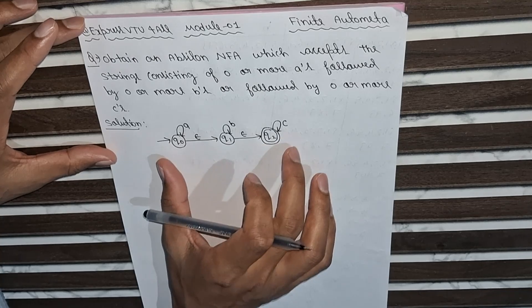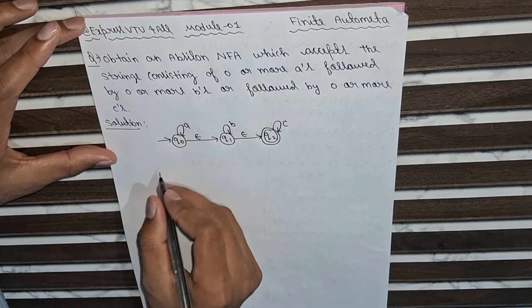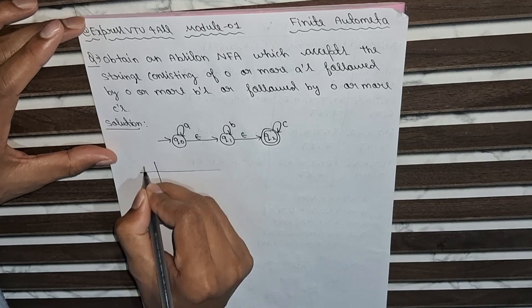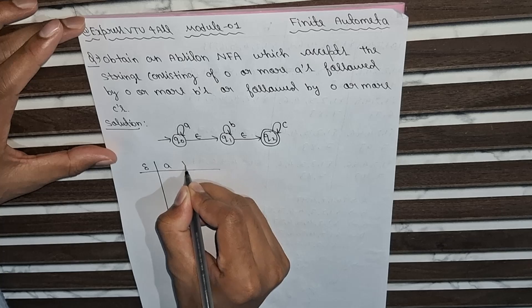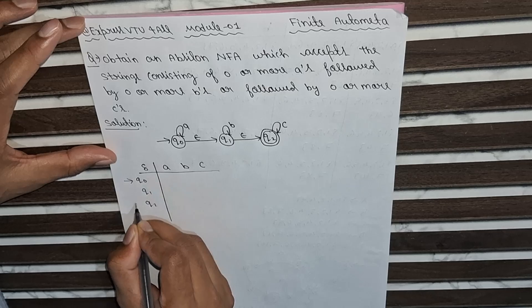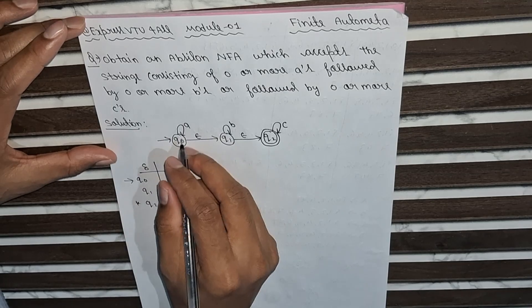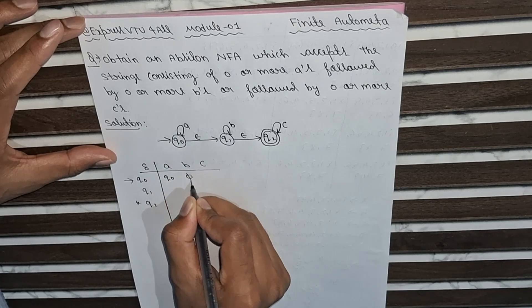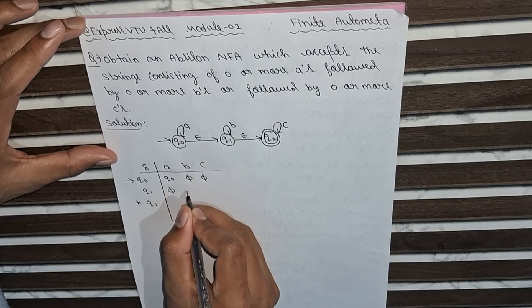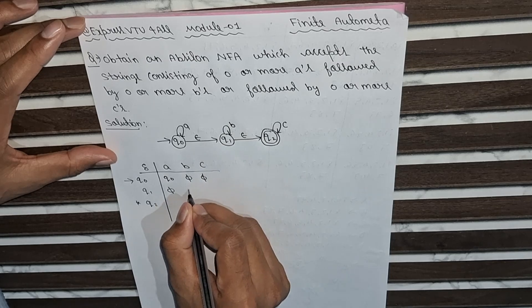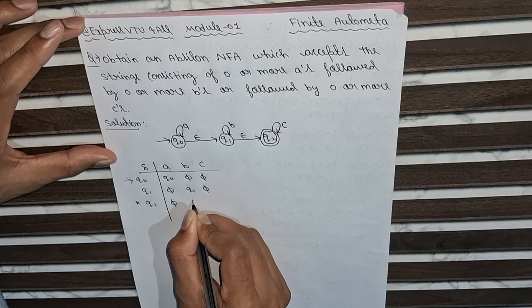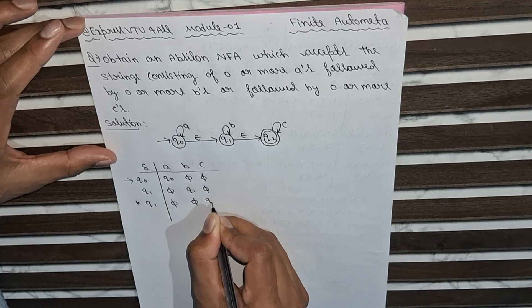So what will be the transition table for the epsilon diagram? a, b, c, q0, q1, q2. This is initial, this is final. q0 with a is a self-loop, and here is nothing, phi, phi, phi. And q1, this is phi, this is q1 self-loop, this is phi, nothing, nothing. This is self-loop q2.